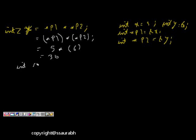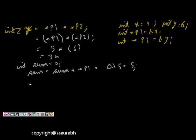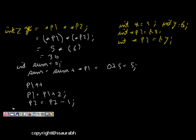Now let's have int sum = 0, and sum = sum + (*p1). So *p1 is equal to 5, hence sum = 0 + 5 = 5. There are other things also. What happens if we do p1++ or p1 + 2, or p2 = p2 - 1? Let's look at these kinds of operations with an array.